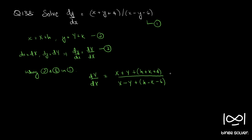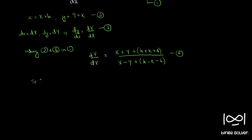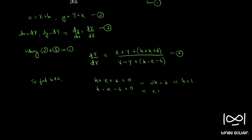Let's call these equation 4. To find h and k, we use h plus k plus 4 equals 0 and h minus k minus 6 equals 0. Adding these gives 2h equals 2, so h equals 1. Using the second equation, k equals h minus 6, which is 1 minus 6, so k equals minus 5.